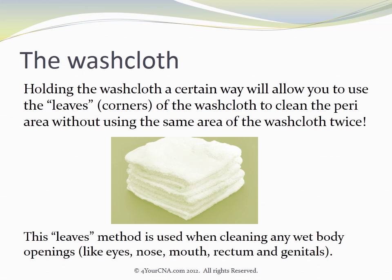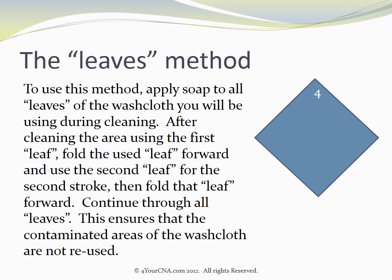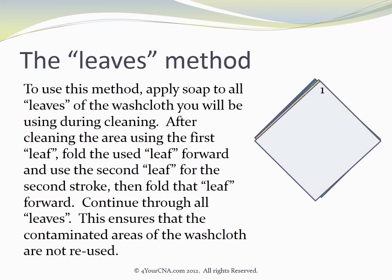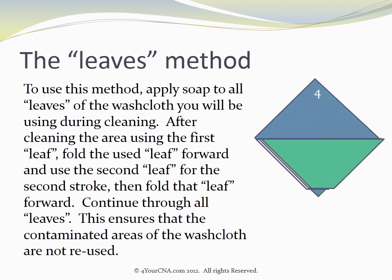Holding the washcloth a certain way will allow you to use the leaves or corners of the washcloth to clean the peri area without using the same area of the washcloth twice. This leaves method is used when cleaning any wet body opening like the eyes, nose, mouth, rectum, and genitals. Fold the washcloth in fourths and place the folded point in the palm of your hand with the free corners pointed upward. Tuck one corner between your thumb and index finger and the last corner between your ring finger and pinky. Apply soap to all the leaves of the washcloth you will be using. After cleaning with the first leaf, fold the used leaf forward and use the second leaf for the second stroke, then fold that leaf forward. Continue through all the leaves — this ensures that contaminated areas of the washcloth are not reused.